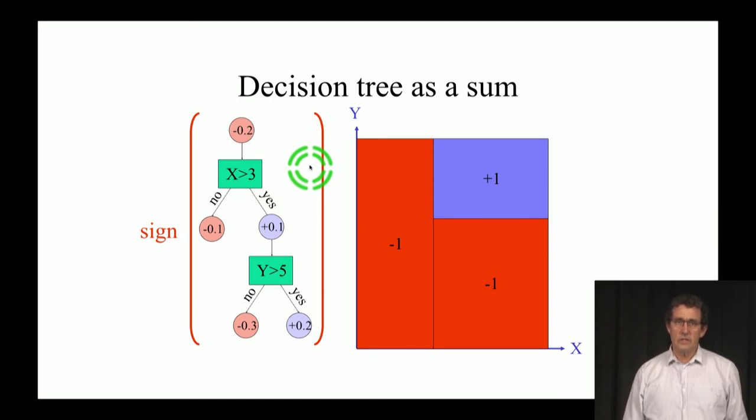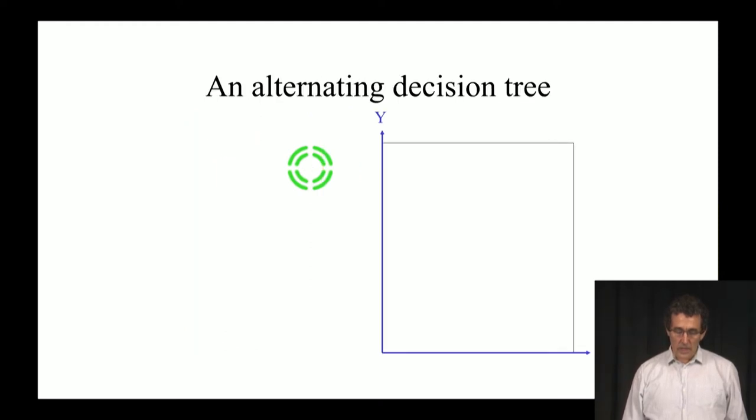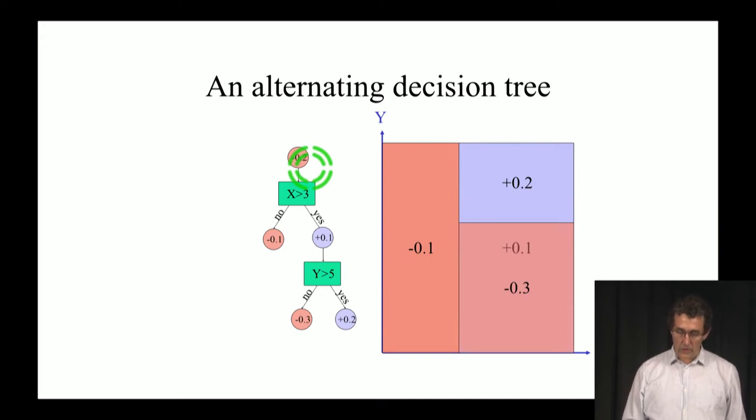And the question is, why is this worthwhile? It's worthwhile because it lets us generate structures that are much more general. Here is an alternating decision tree. We built first a decision tree, just like we did before. Now, when we're looking for where to add a new weak rule, we don't necessarily have to add it only in the leaves. We can add a weak rule here, we can add a weak rule here.